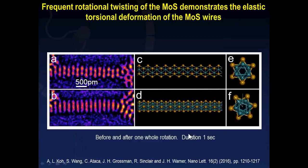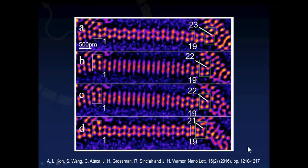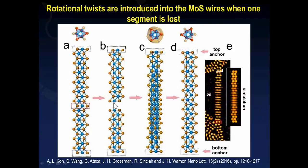Using a combination of experimental data and simulation, we found that the MoS₂ wires have a rotational twisting motion, taking about one second for the wire to undergo a full rotation. Analyzing consecutive frames, if we denote the segment on the left as number one — our anchoring segment — we see that the wire actually loses segments over time. When one segment is lost in the middle, two opposing segments will have identical orientation and rotational twists are introduced into the MoS₂ wires.